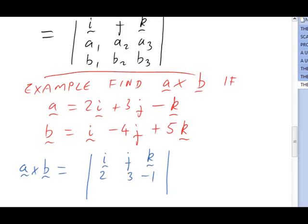And then the components of b, 1, negative 4, 5, go along the bottom row. So there's our compact form as a determinant. All we have to do now is remember the process that formed that determinant in reverse. In other words, we need to evaluate the determinant. The process is as follows. We do what's called expanding across the top row.